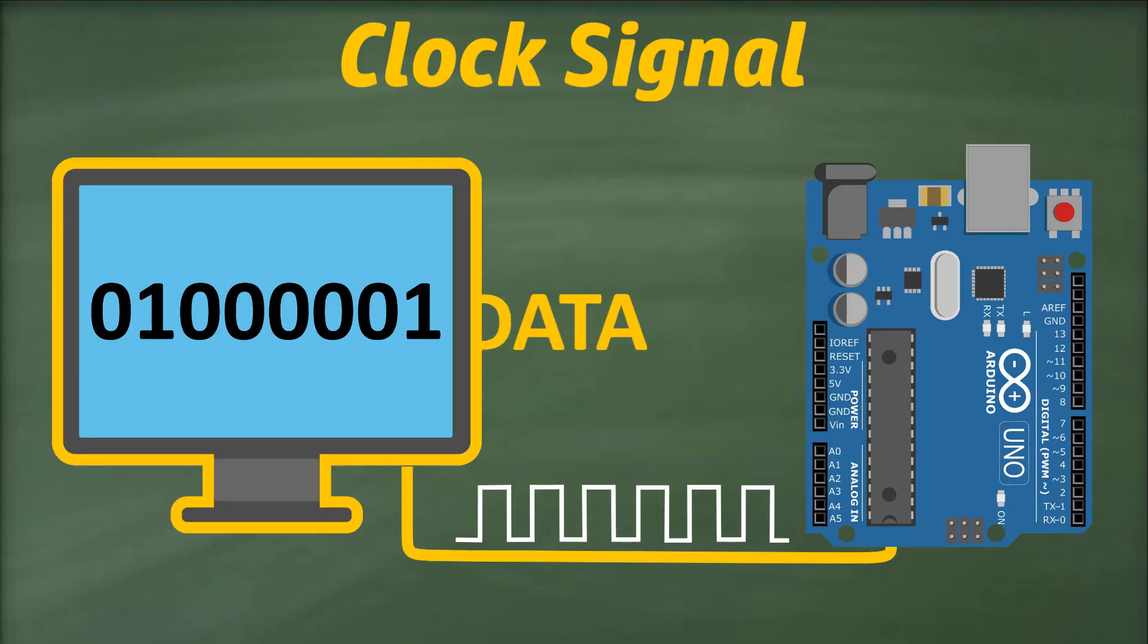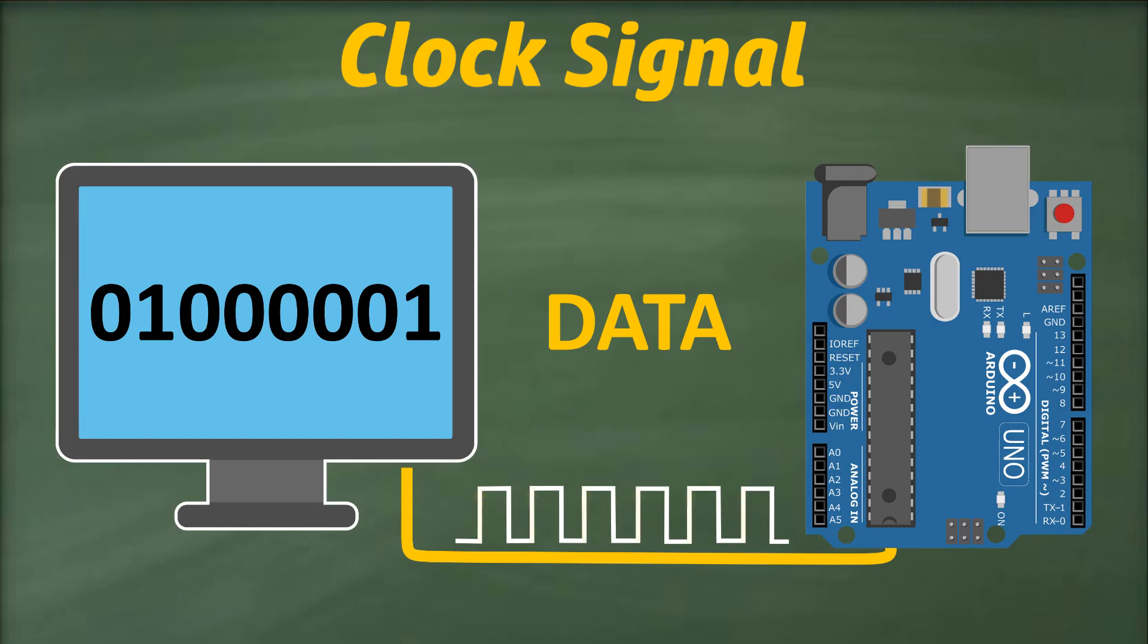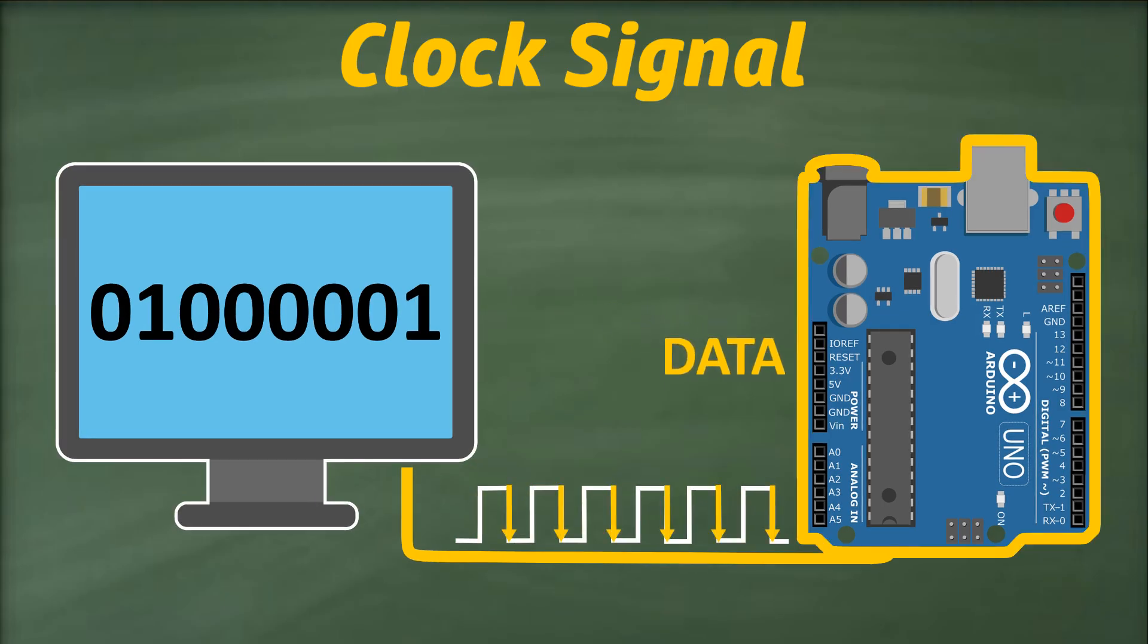However, the sender will send data at each rising edge of the clock signal. Meanwhile, the receiver will read that data from the data line at each falling edge of the signal.